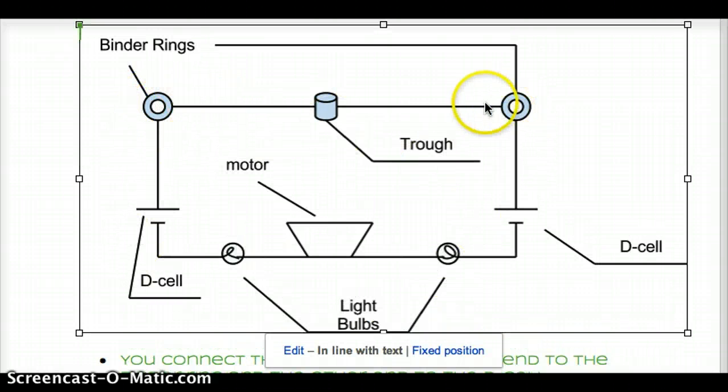Here, binder rings. This is a trough. And this is actually a buzzer. I kind of messed up. I meant to type buzzer and I called it motor. And then this is a D cell. And this is a D cell.